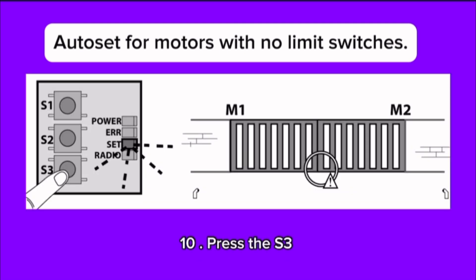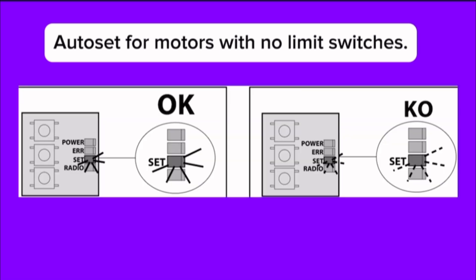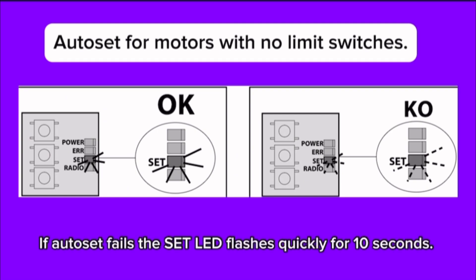Step 10: Press the S3 button to finish motor 1's closing maneuver. Step 11: If the work time has been stored correctly, the set LED comes on for 10 seconds. If auto set fails, the set LED flashes quickly for 10 seconds.